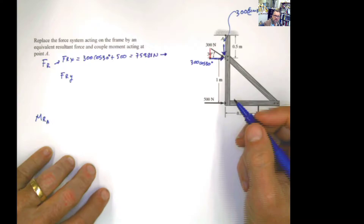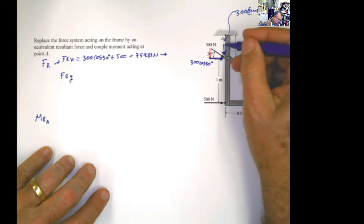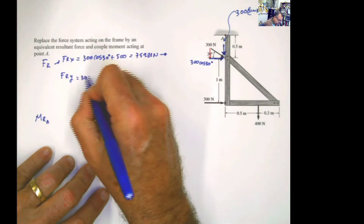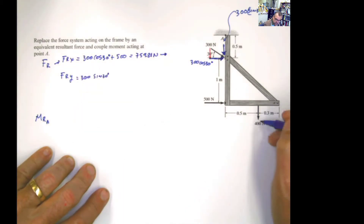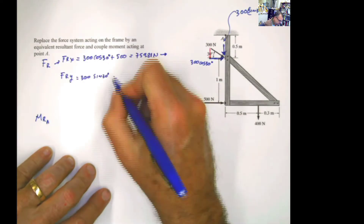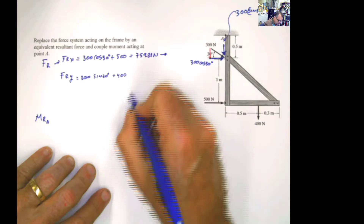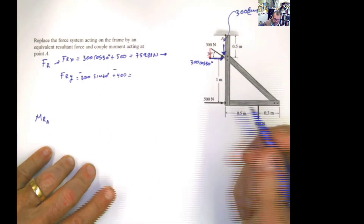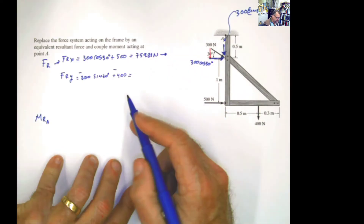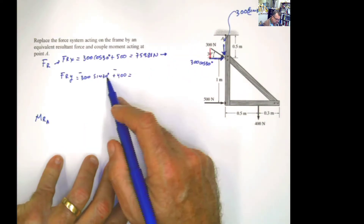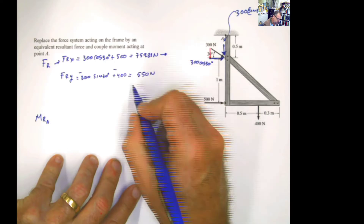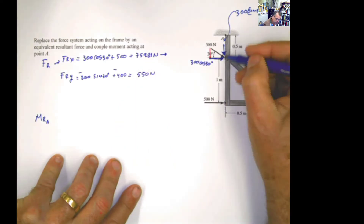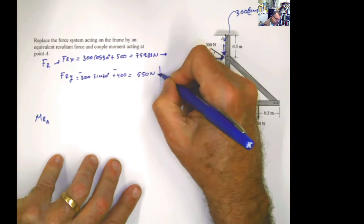Now the same thing in the y direction. In the y direction, we have 300 sine 30, and I have this other force which is 400. The result is going to be — and I know these should be negative — but 300 sine 30 plus 400 is going to be 550 Newton, and it should be negative, meaning it is acting downwards.